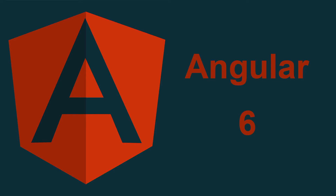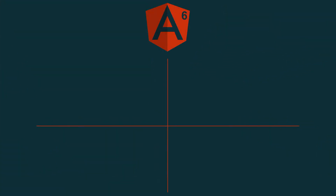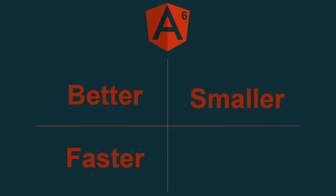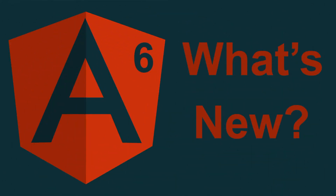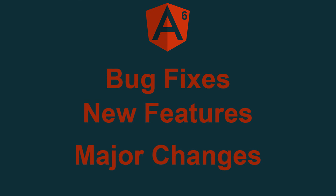So what should we expect from Angular 6? Angular 6 is expected to have better code for desktop while applications. We will see a better, smaller, faster and easier version of Angular as compared to previous. Angular 5 has lots of bugs fixed in Angular 6, and we also have addition of lots of new features and major changes in Angular 6.